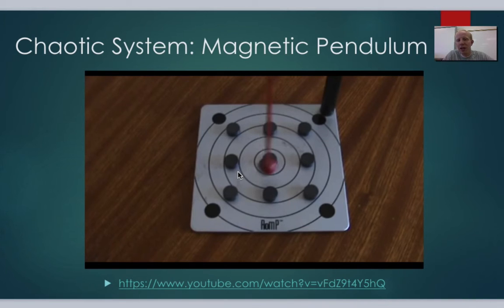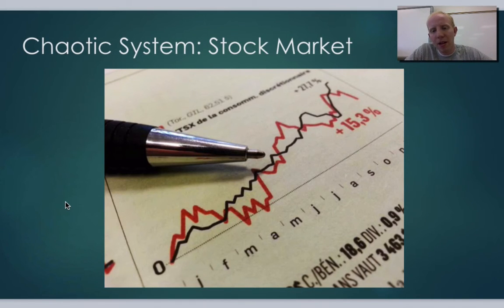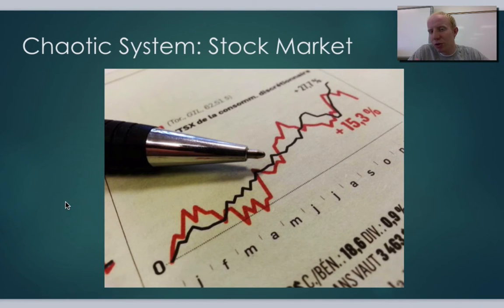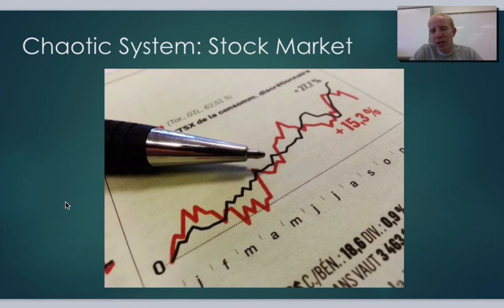The last example is the stock market — a great finance example of a chaotic system. The stock market has tons of chaos related to it, and a lot of people lose or gain money based on it. But again, it's something that can be predicted, usually only in the short term. It is predictable in nature — it's just chaotic. You have to be very careful about the initial conditions, measure them very accurately, and then you can predict it. But the further out you get, the harder it is to predict.